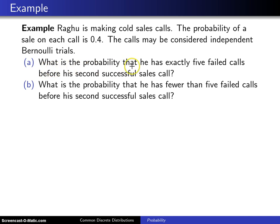The first question is: what is the probability that he has exactly five failed calls before his second successful sales call? The second problem is: what is the probability that he has fewer than five failed calls before his second successful sales call?